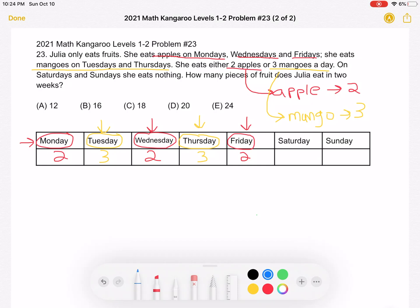That leaves us with Saturdays and Sundays, where she eats nothing. So if it's Saturday or Sunday, she eats zero pieces of fruit.